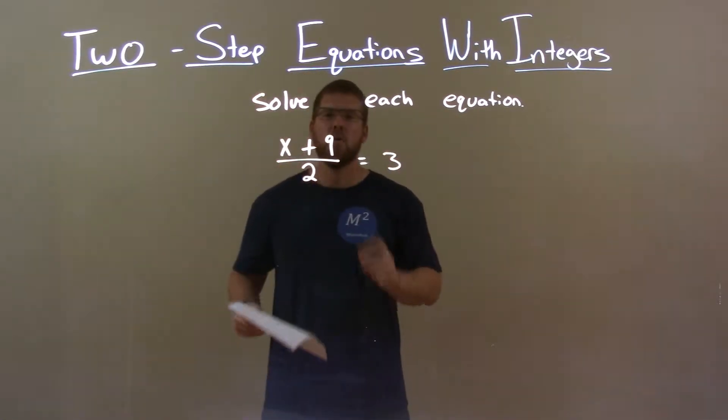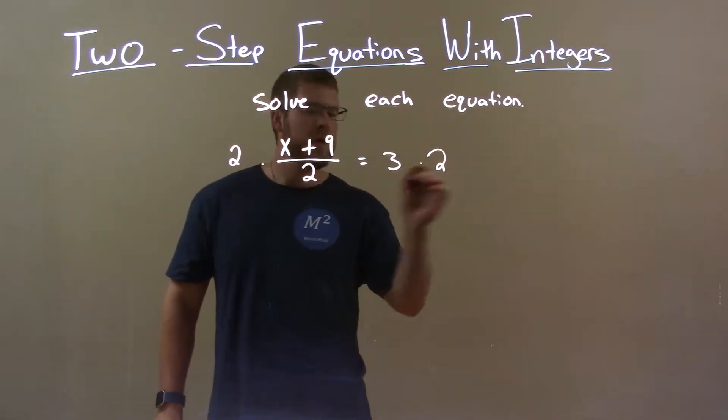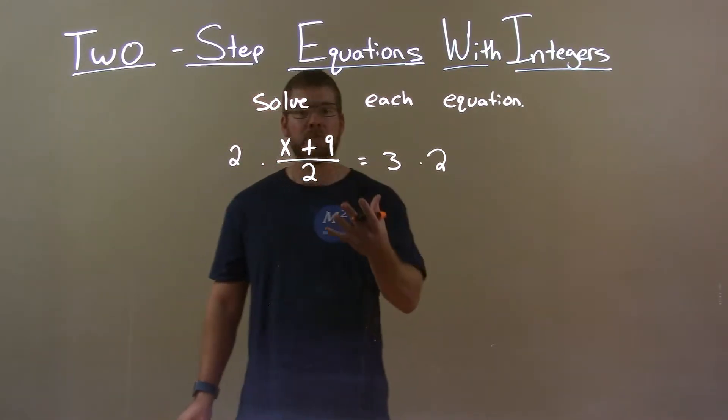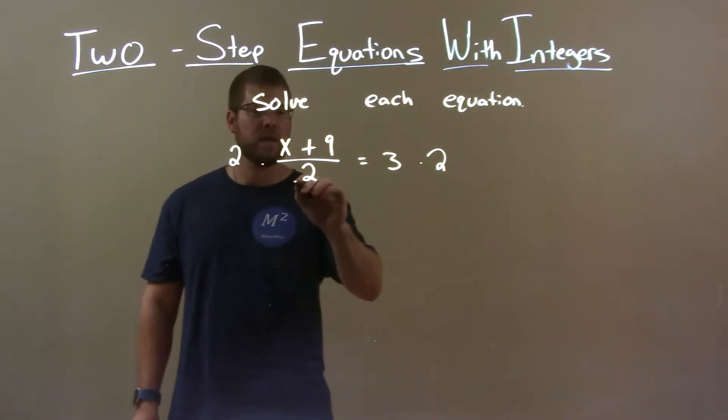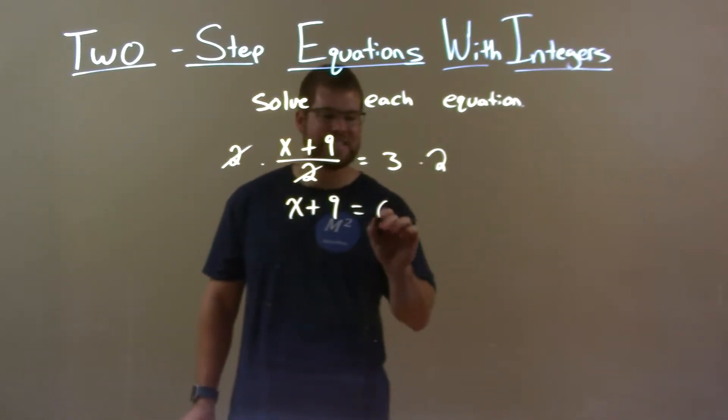Alright, well I want to get x by itself. So to do that, the first step is multiply both sides by 2. Since we're dividing by 2, the opposite of division is multiplication. The 2's cancel, leaving me x plus 9 equals 3 times 2 which is 6.